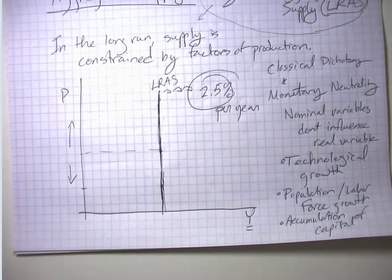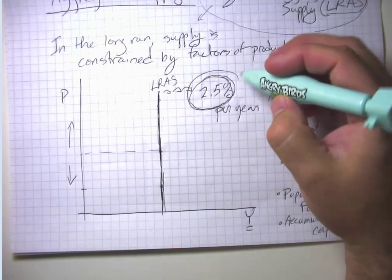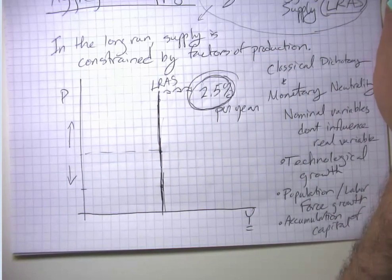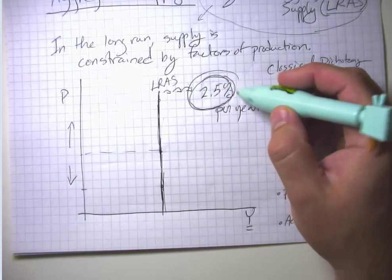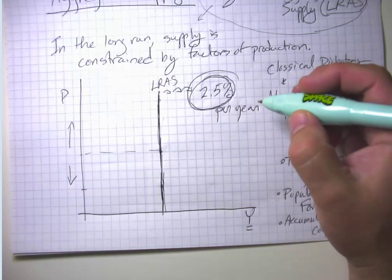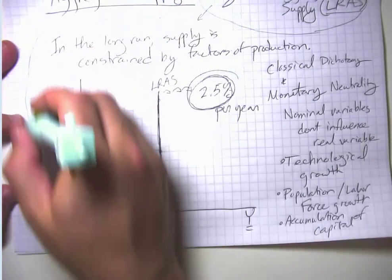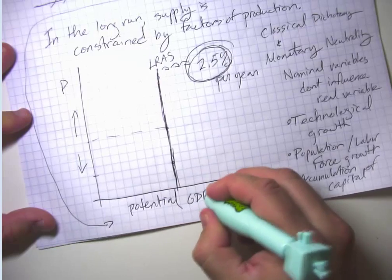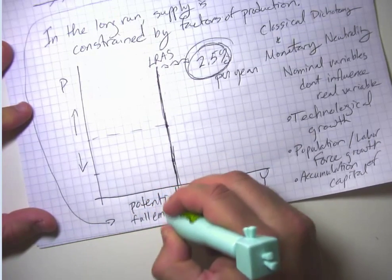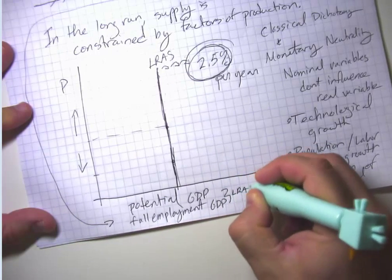In many of the analyses we'll do, we're basically going to ignore the fact that it shifts outward a little bit over the years, because a lot of times when we're using the aggregate demand, aggregate supply model, we're really interested in what's happening in the short run — what's happening with a business cycle. That slow growth of potential output by 2.5% per year doesn't tell us much about short run business cycles. This is sometimes also called potential GDP, or among older economists, full employment GDP — all synonyms for long run aggregate supply.